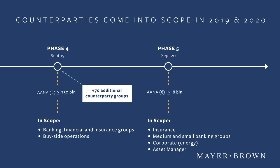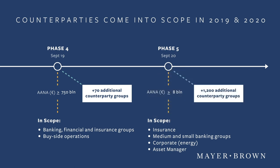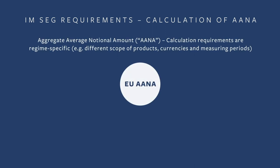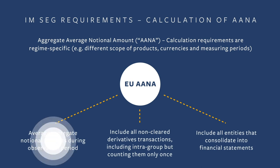Phase five, the final phase coming into effect on 1st September 2020, affects counterparties with a gross notional amount of uncleared OTC derivatives at a measurement point above 8 billion euros. Some estimates place the number of affected counterparty groups as high as 1,200. The question of whether you are in or out of scope for a particular phase is one of the big questions for any counterparty group. The rules require counterparty groups to look at the aggregate average notional amount of outstanding covered derivatives for the last business day of March, April and May of each year for all entities in the group measured over the observation period.